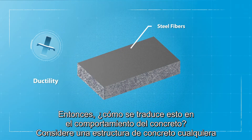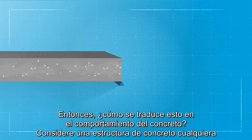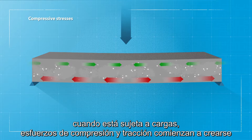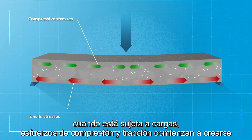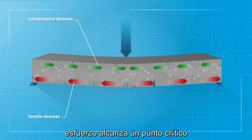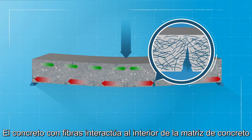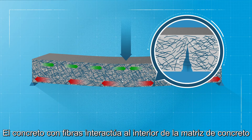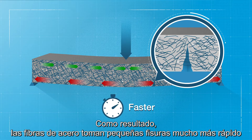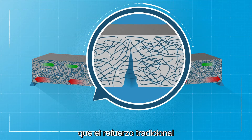So, how does this translate into concrete behavior? Take a random concrete structure. When subjected to loading, compressive and tension stresses start to build. Over time, small cracks will appear in places where the stress reaches a critical point. Steel fiber interacts within the concrete matrix, absorbing tensile stresses at any point and in any direction. As a result, steel fiber picks up small cracks much faster than traditional reinforcement.